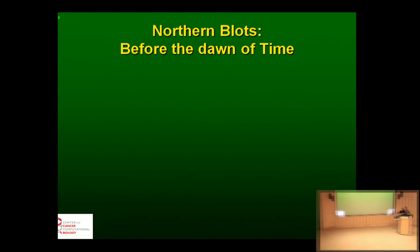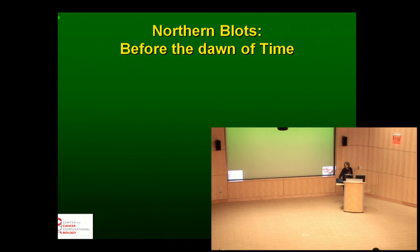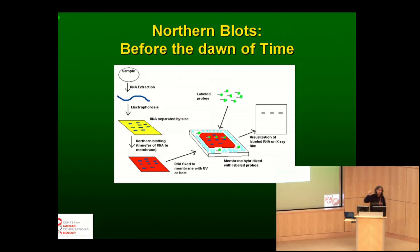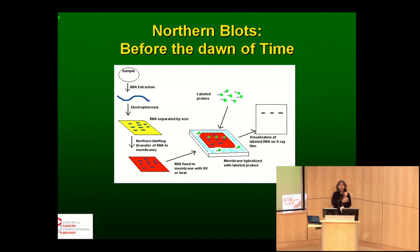What I thought I would do is take you back to before the dawn of time and display northern blots. Here's a cave painting showing how northern blots work. Basically what you do is extract RNA from a cell. The reason you're interested in RNA is that we all think about the progression from DNA to RNA to protein, with proteins really being the functional units in the cell.